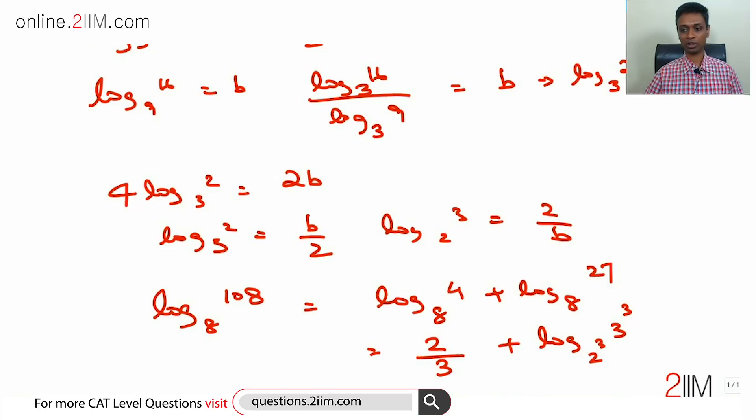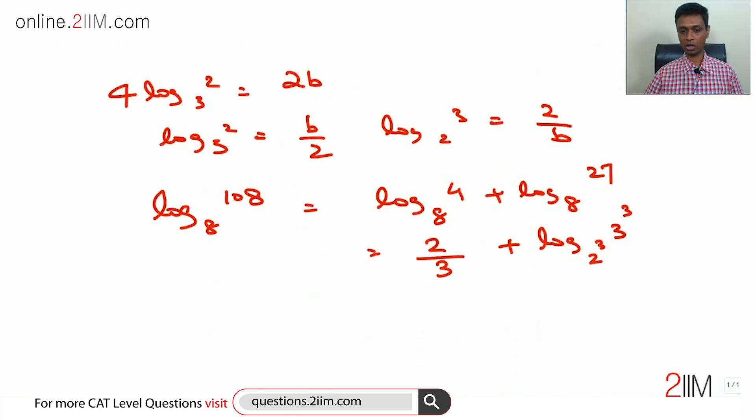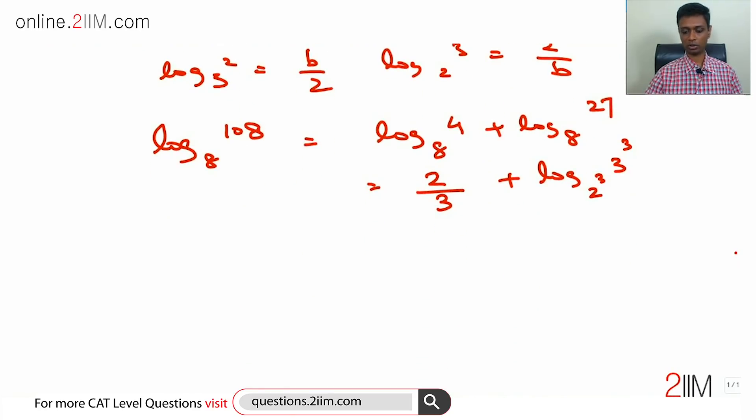Very simple, because the same power will cancel each other or the number we are looking for. This is equal to 2 by 3 plus log 3 to the base 2. Log 3 to the base 2 is 2 by b.